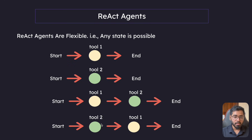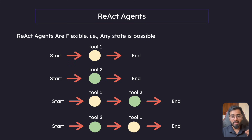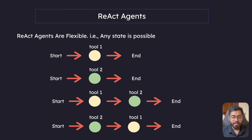In the previous section, we saw it executed two tools. First, it used the Tavily search tool to make a Google search and figure out when was the SpaceX launch, and then it figured out the current time. It could have also done it the opposite way - figured out the current system time first and then did the Tavily search as well.